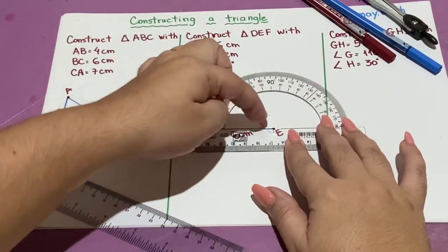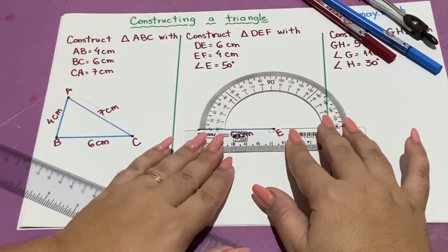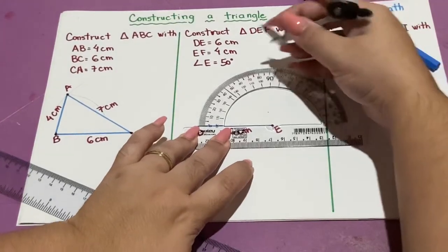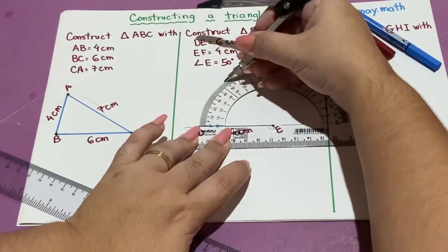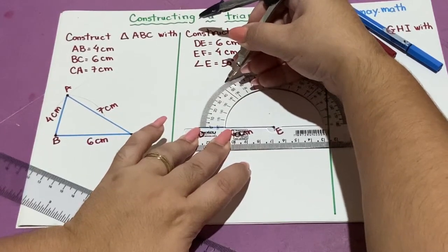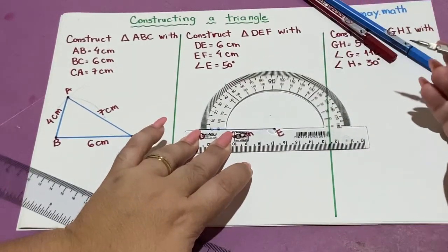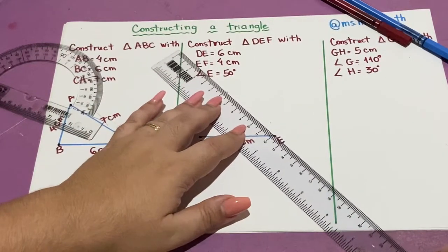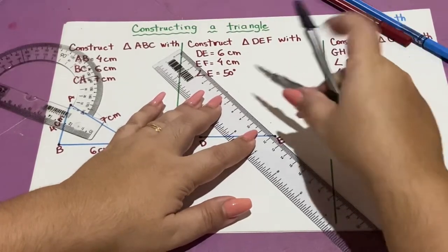Put the protractor aligned with the side, and then mark the 50-degree arc right here. Now I'm going to use my ruler and draw a segment here, drawing these two dots.